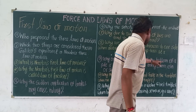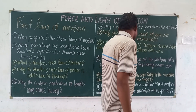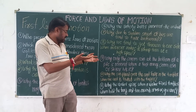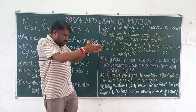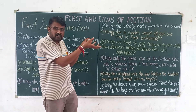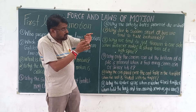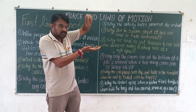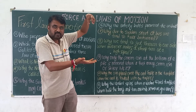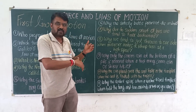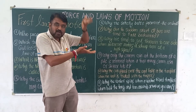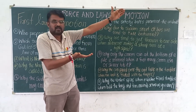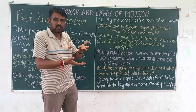Why is only the carrom coin at the bottom of the pile removed when a fast-moving striker hits it? When the striker hits the bottom coin, force is applied only on that bottom coin, so it goes ahead. But the upper coins are not hit by the force, so they do not move with the bottom coin — they simply fall down. This is also the law of inertia: the upper coins try to maintain their inertia and stay in position, while only the bottom coin is displaced.